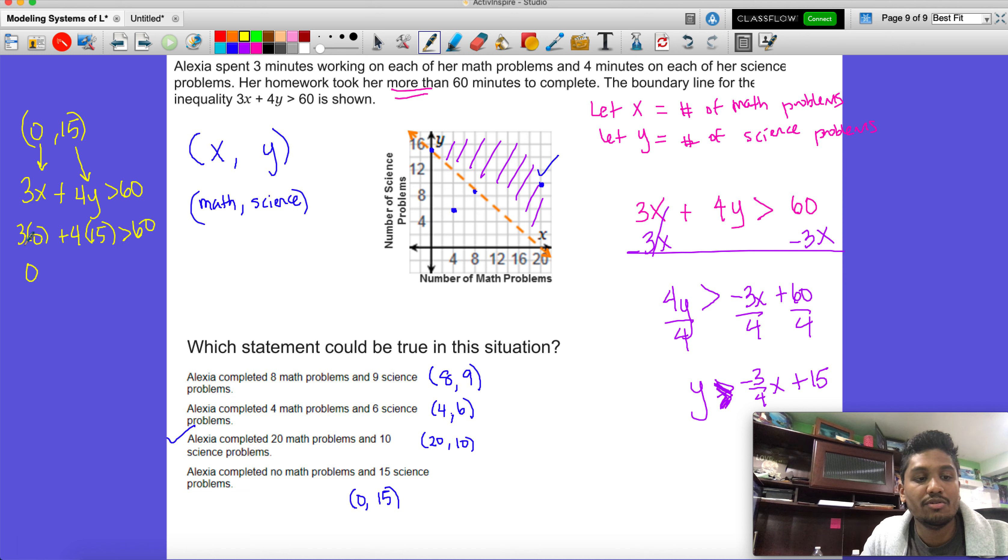Three times zero plus 60 is greater than 60. Is it true that 60 is greater than 60? No, 60 is equal to 60, but there's no equal sign under the inequality, so this is technically false.